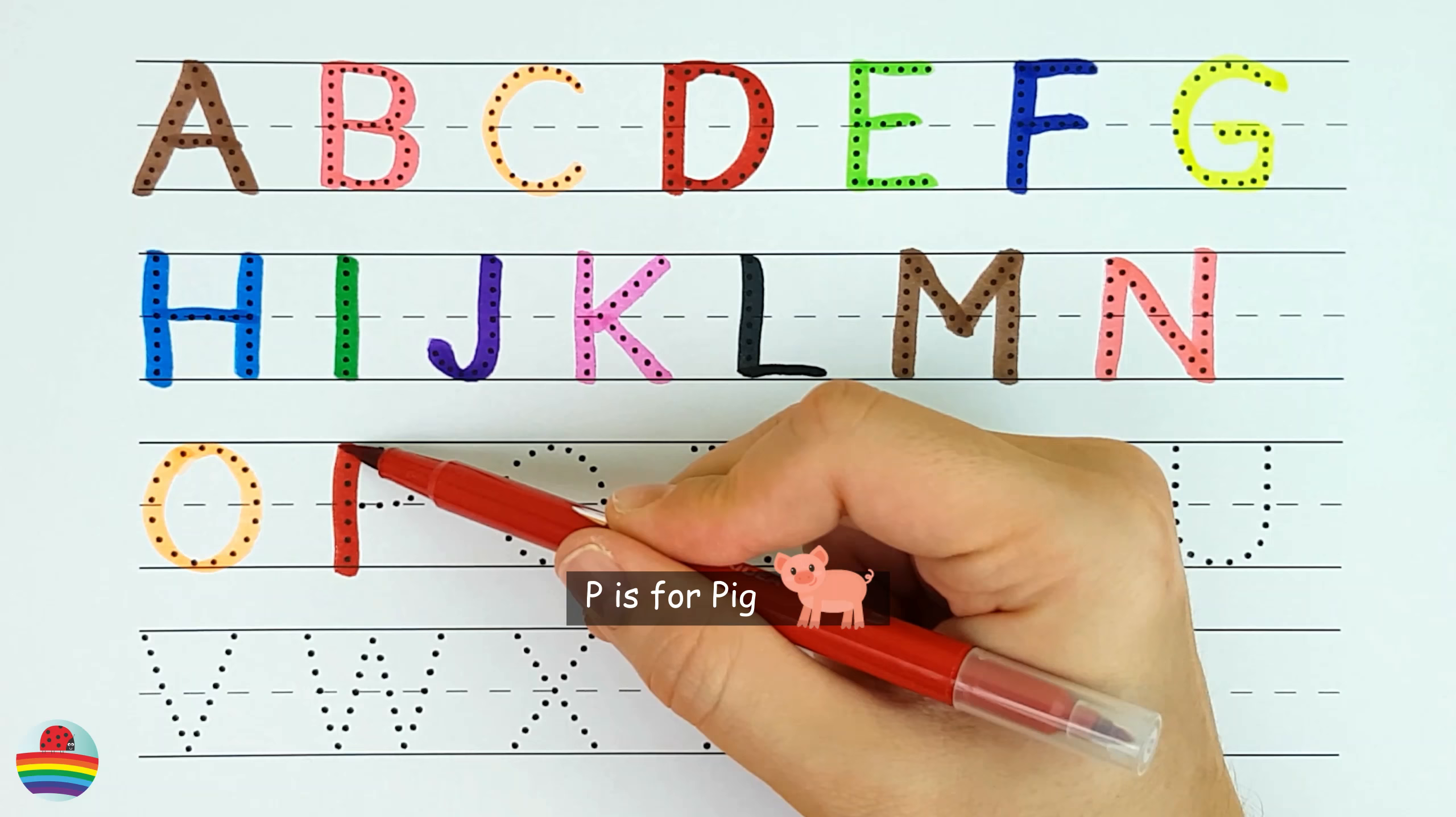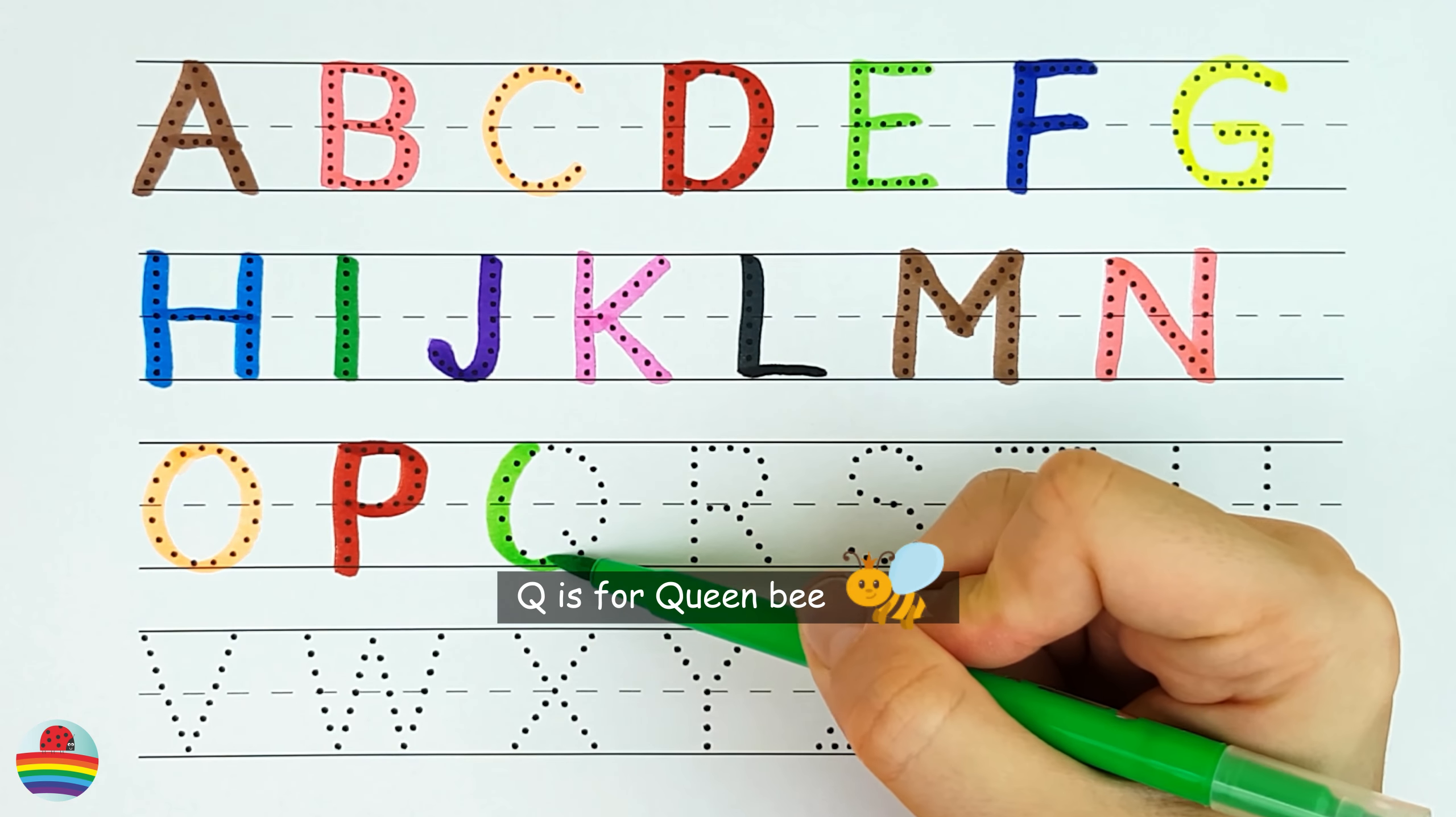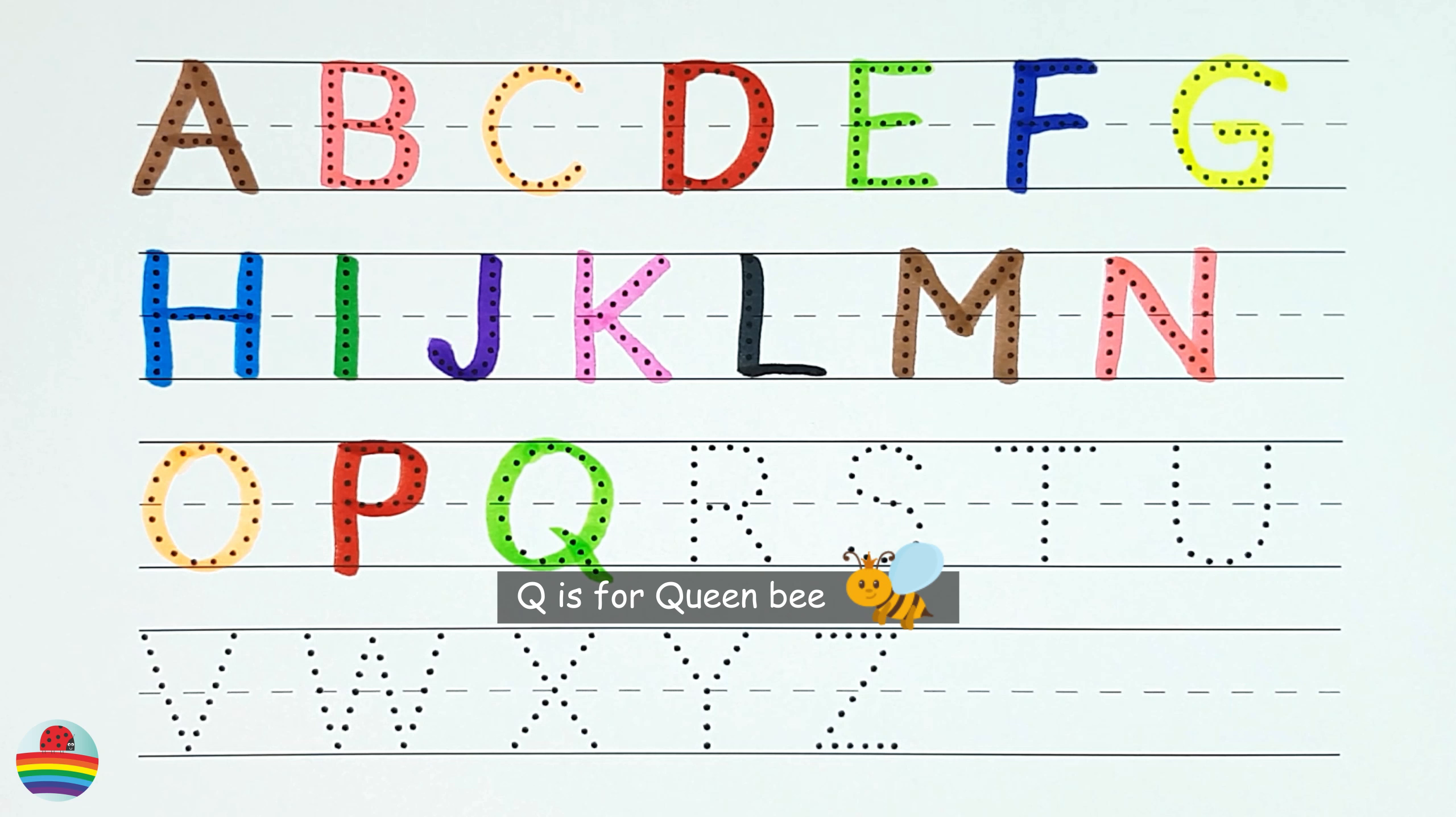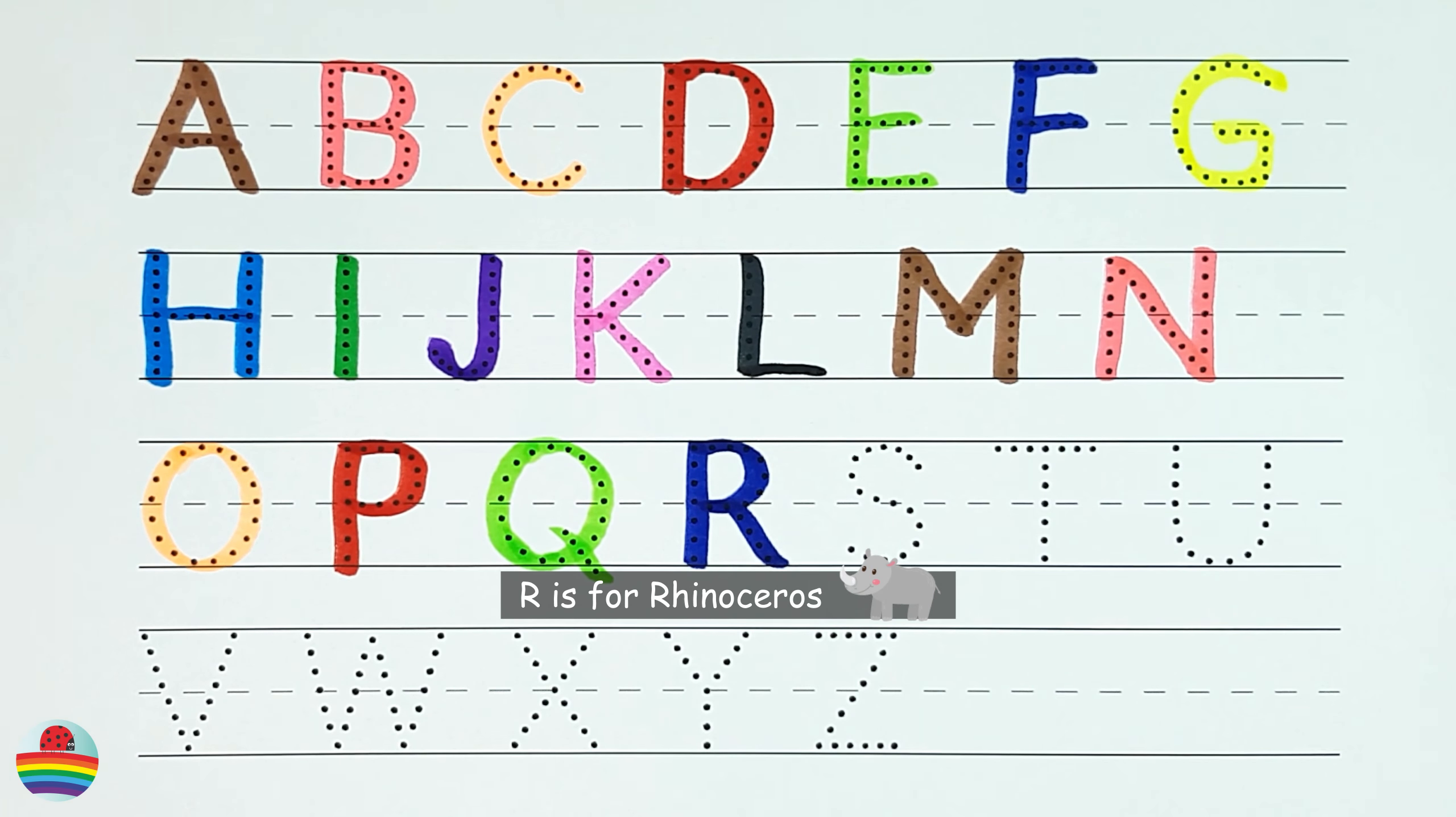P. P is for pig. P. Q. Q is for queen bee. Q. R. R is for rhinoceros. R.